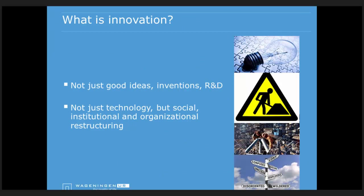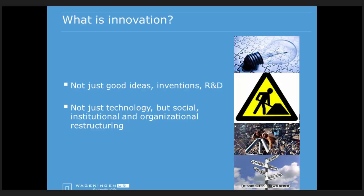What is innovation? Innovation scholars have discovered that innovation goes far beyond research and inventions. Innovation systems thinking considers innovation as a puzzle involving many people, a lot of hard work, and uncertainties at different levels - not only technological but also social, organizational, and value chain uncertainties. It goes far beyond the farm level. Innovation in the innovation systems perspective is really about social, institutional, and organizational restructuring of the farm and beyond.